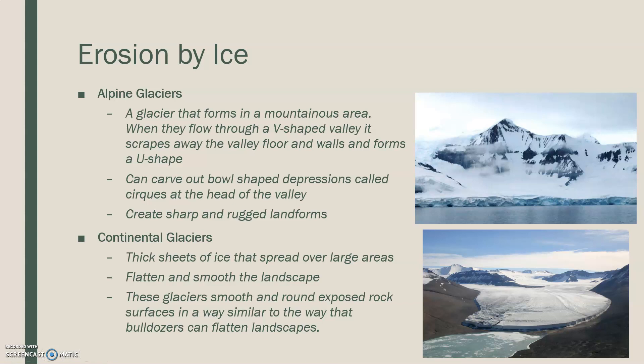Alpine glaciers and continental glaciers are the two main types of glaciers. A glacier that forms in a mountainous area flows through a V-shaped valley. It's going to scrape away at the valley floor and walls, forming into a U-shape over time — so it starts pointed and eventually becomes more bowl-shaped. It can carve out bowl-shaped depressions, known as cirques, at the head of the valley, and can also create sharp and rugged landforms.